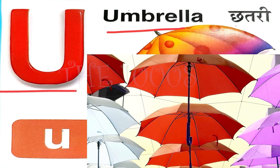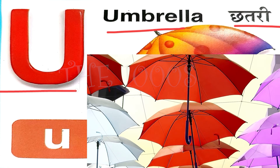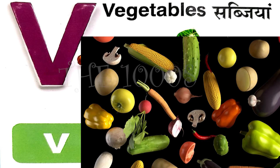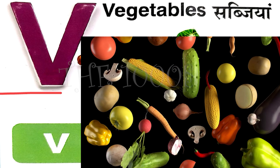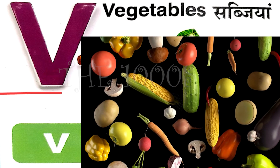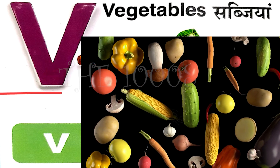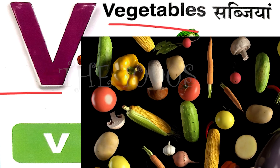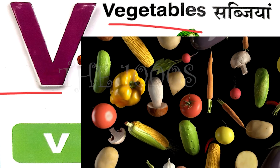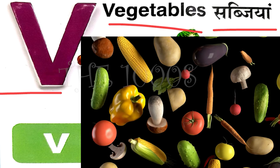U for umbrella, umbrella means chatri. V for vegetables, vegetables means sabjiya.